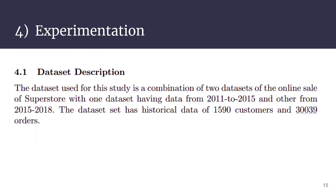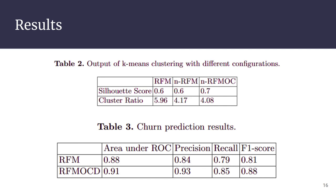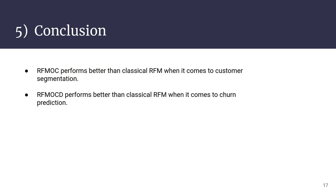Chapter four discusses the results of experimentation and dataset details. The dataset contains online sales data of a Superstore from 2011 to 2018 with 1,590 unique customers. From table 2, it is clear that RFM OC performs better at customer segmentation, and table 3 shows that RFM OC performs better at churn prediction. In conclusion, RFM OC outperforms classical RFM for customer segmentation, and RFM OCD outperforms classical RFM for churn prediction, as per the experimental results.